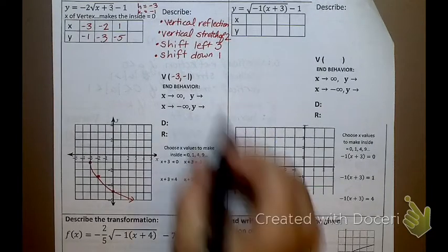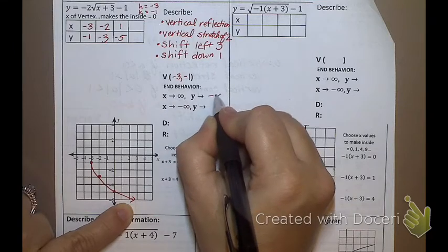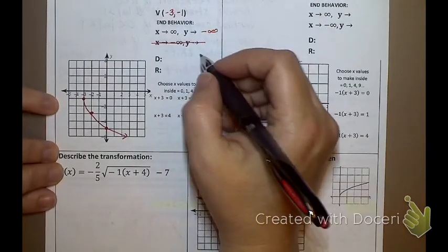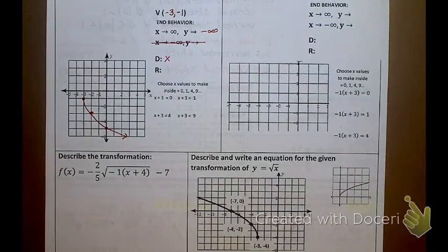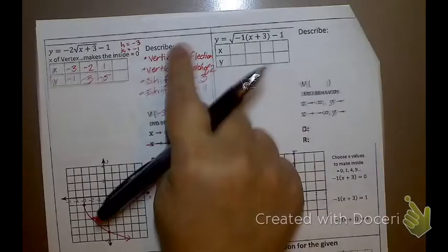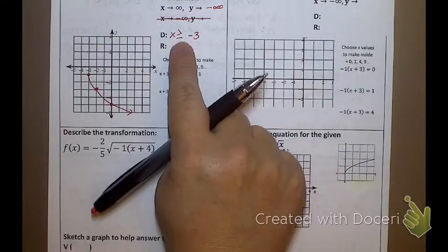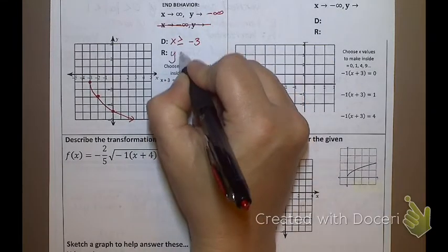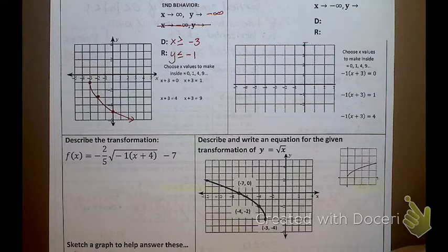So end behavior — what's going on on the right side? It's going towards negative infinity. The left side we still don't worry about because I can see it. What is my domain? X is greater than or equal to negative 3. I had a vertical change, not a horizontal reflection, so my horizontal is still going to be greater than or equal to. My vertical changes, which is my range. So my range is y is less than or equal to negative 1.